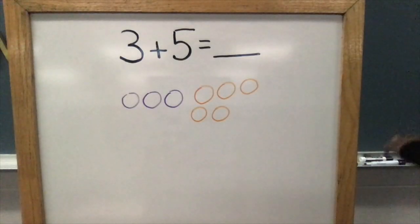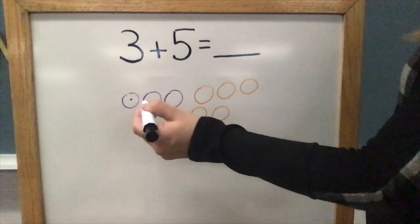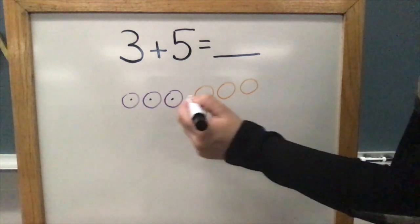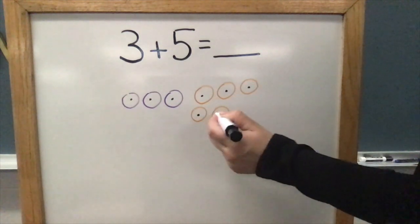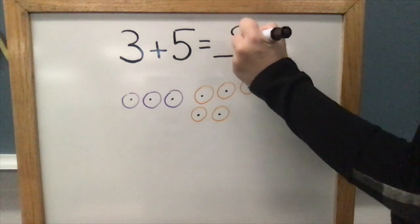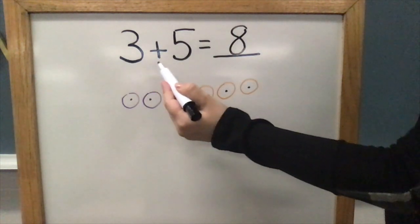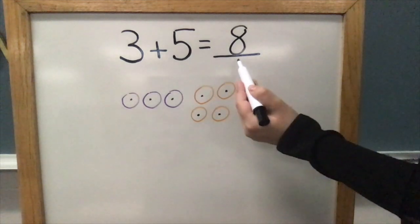How do I figure out how many in all? You got it. I need to count all of them. Count with me. One, two, three, four, five, six, seven, eight. There are eight in all. Three plus five equals eight.